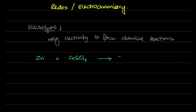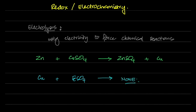You know that zinc reacts with copper sulfate to give zinc sulfate and copper. On the other hand, if you had copper and iron sulfate, there would be no reaction, because copper is less reactive than iron. You've had to learn this in O-levels.